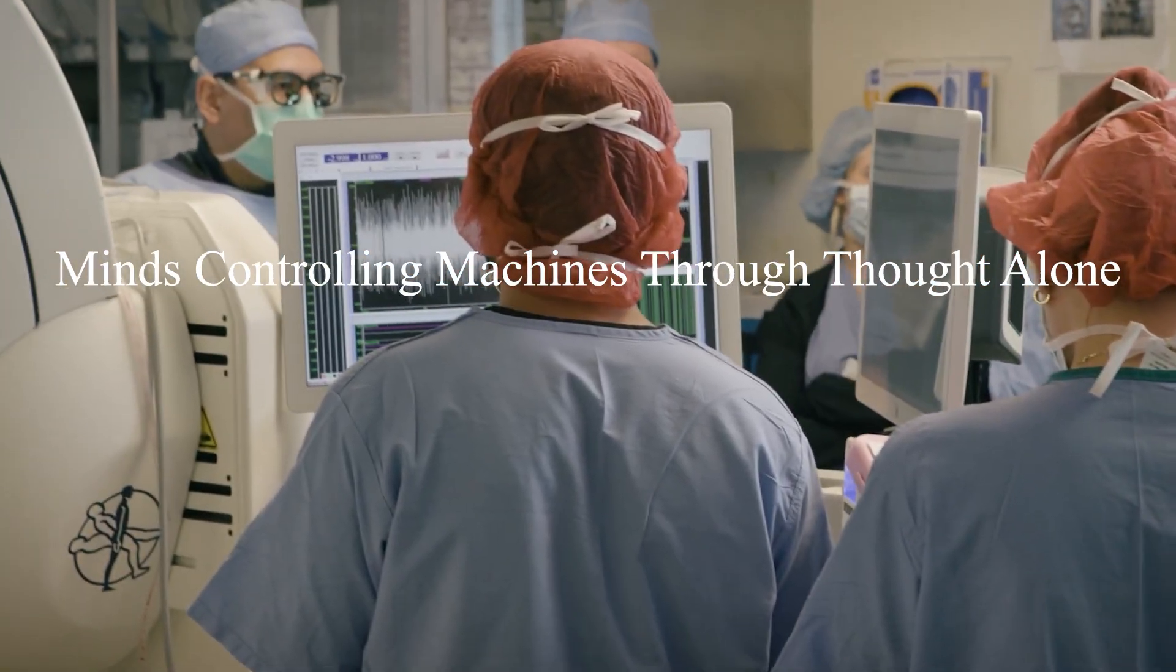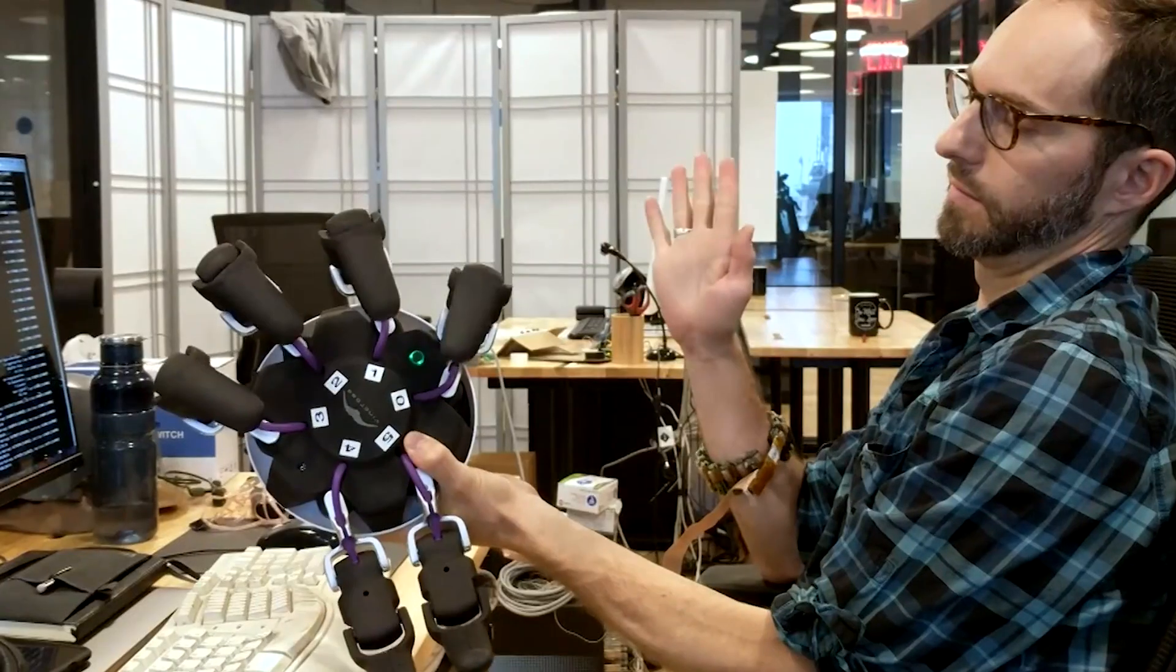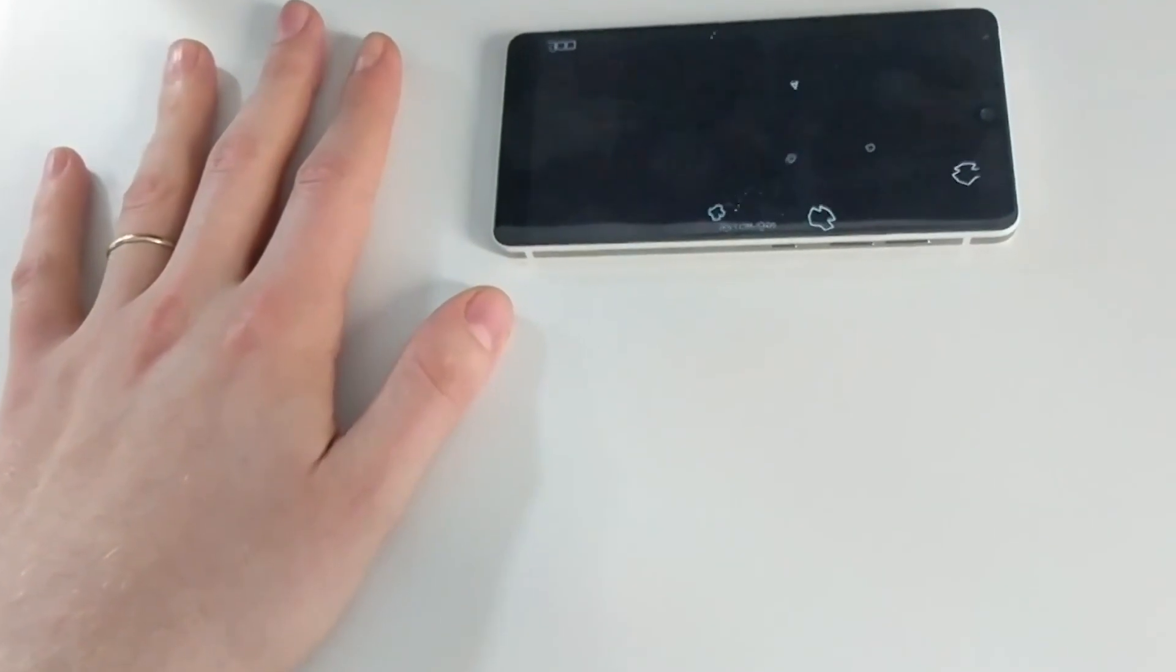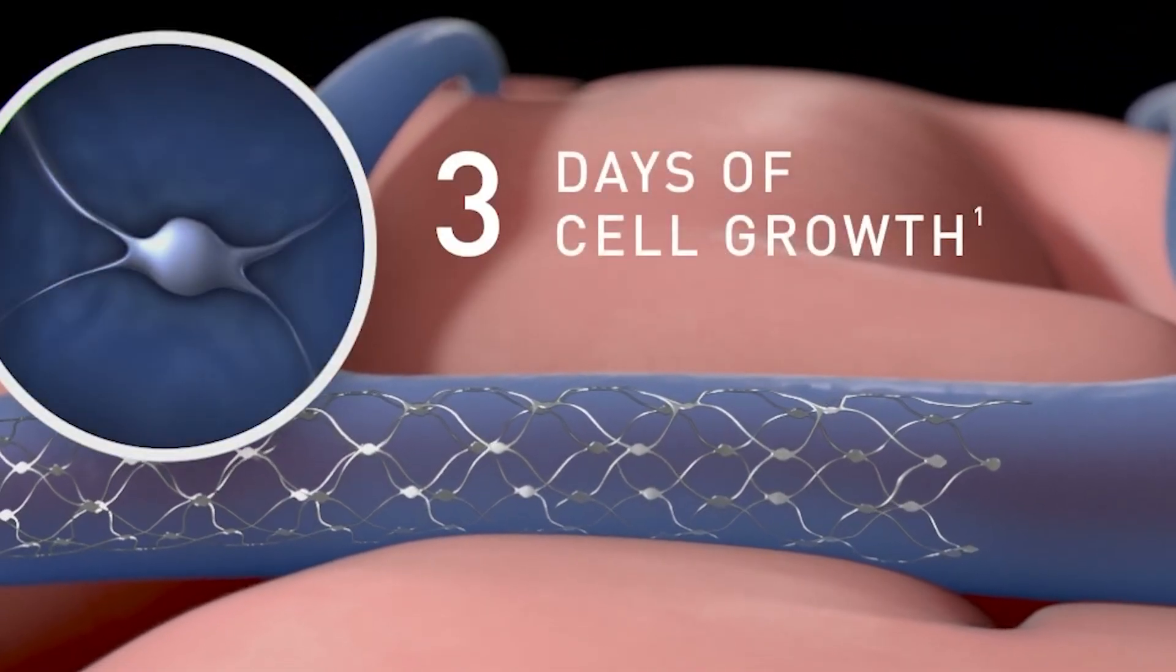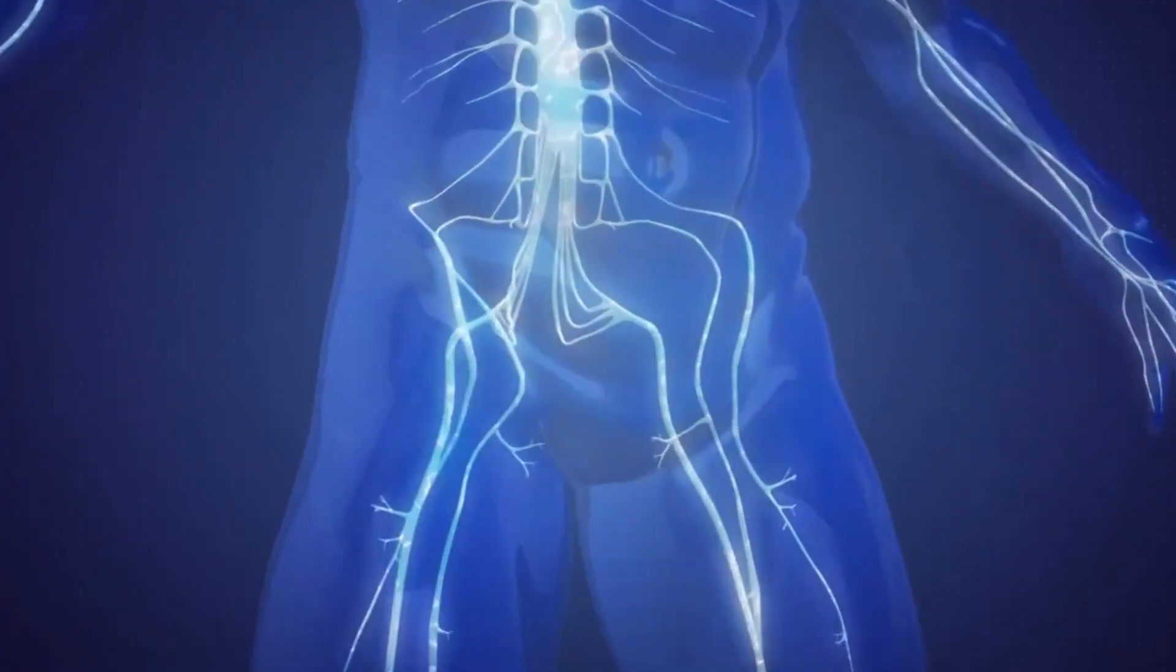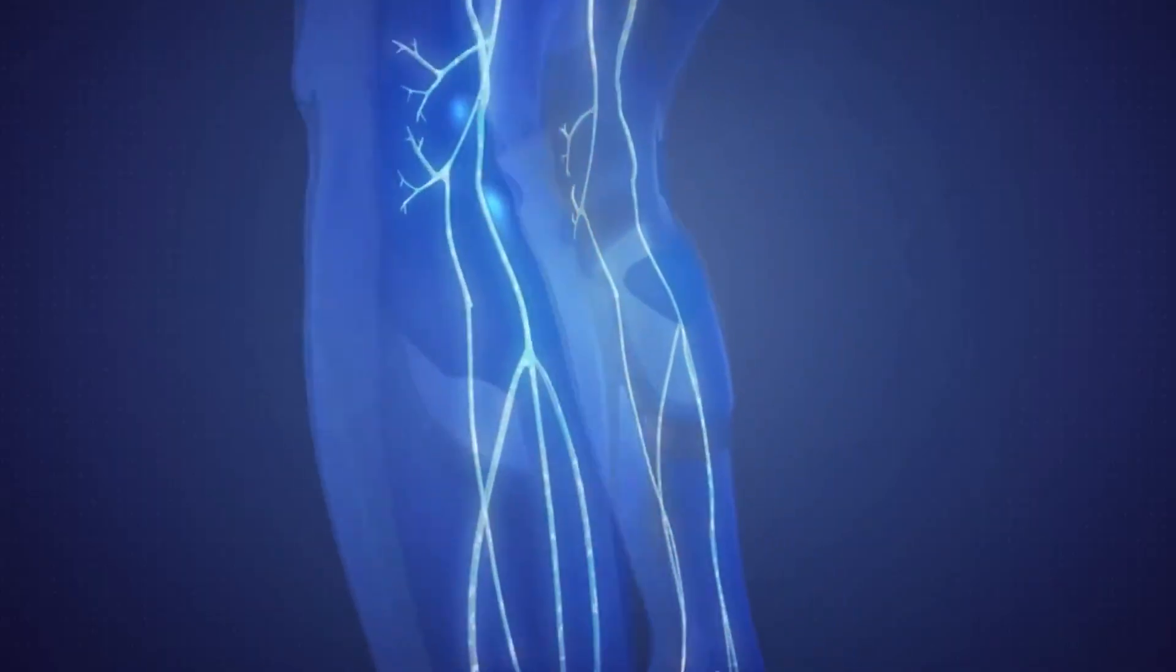Minds controlling machines through thought alone. Brain-computer interfaces cross decisively from theoretical research to actual human trials producing remarkable results. Companies like Neuralink and Synchron have implanted devices that allow paralyzed patients to type messages, control cursors, and interact with computers using only their thoughts. No physical movement whatsoever required.